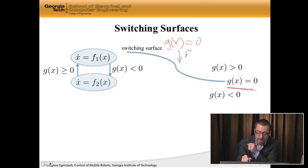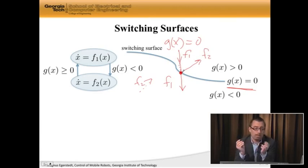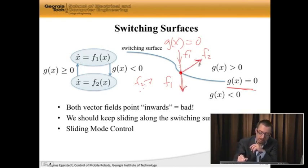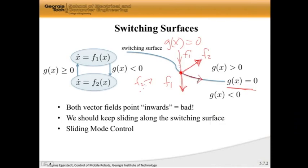On one side I'm going to be using f1. When I hit this point, let's say that f1 is pointing inwards. On the other side I'm using f2 — let's say f2 here points outwards. This means that when I hit this point, again I grind to a halt. Both vector fields, f1 and f2, point in the wrong direction: f1 points over into the f2 territory and f2 points over into the f1 territory. But it's clear what should really happen — we should somehow slide along the switching surface. Because f1 and f2 are pulling in different directions, this is why it's known as sliding mode control: we slide along the switching surface.